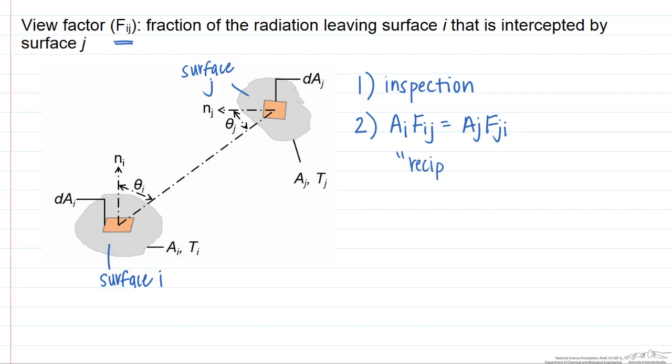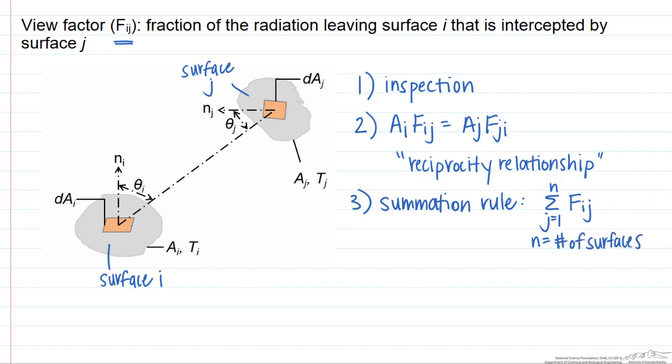Finally, we can use what is known as the summation rule. What it says is that the summation of all these view factors from j equals 1 to n, where n equals the number of surfaces, that summation has to equal 1. This by the way includes F sub ii, which represents the fraction of radiation that leaves one area and is intercepted by that same area.